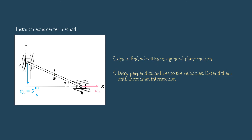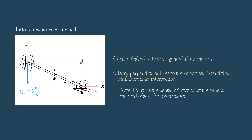Now we are going to do the second method — the instantaneous center method. Steps one and two are the same as the previous method, so we go directly to step three. We draw perpendicular lines to the velocities and extend them until they intersect. This is the perpendicular line to the velocity at A, and this is the perpendicular line to the velocity at B. Both perpendicular lines intersect at point I — we call it the instantaneous center of rotation of the general motion body at a given instant.